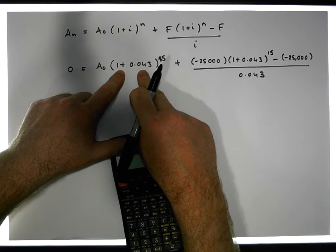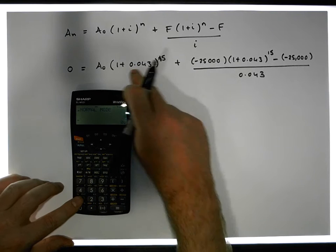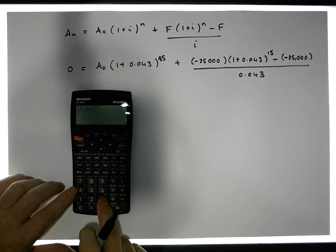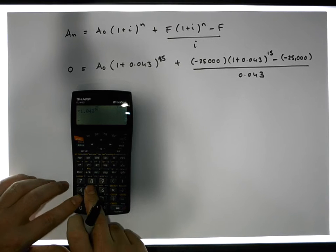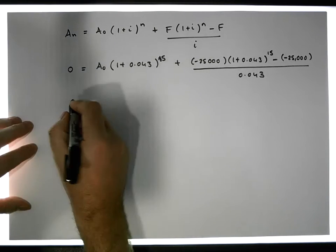That gives us a value of approximately 1.88. So this becomes zero is equal to A0 times 1.88 approximately.